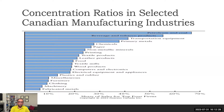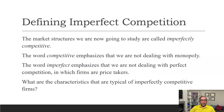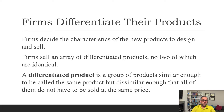The market structures we are studying are called imperfect competition. The word 'competitive' emphasizes that we're not dealing with a monopoly, and the word 'imperfect' emphasizes we're not dealing with perfect competition where firms are price takers. That's why I mentioned at the beginning that these are hybrid markets. The basic characteristic of imperfect competition is that firms differentiate their products.